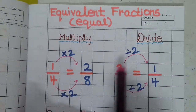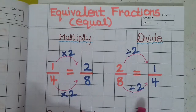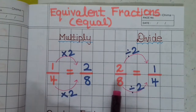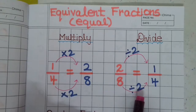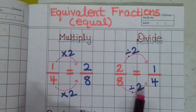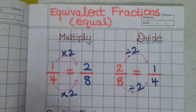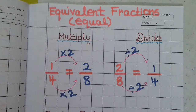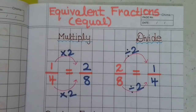To find equivalent fractions, divide the fraction — numerator and denominator — by the same number. This is the procedure. Equivalent fractions can be found either by multiplying or dividing. When multiplying, the same number is applied to both numerator and denominator. For division, the same procedure applies: divide both numerator and denominator by the same number.